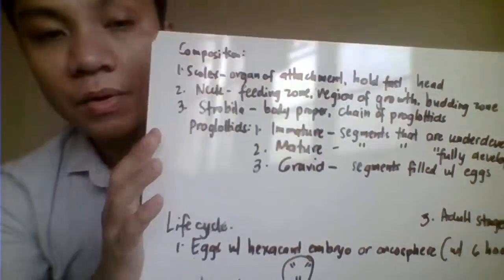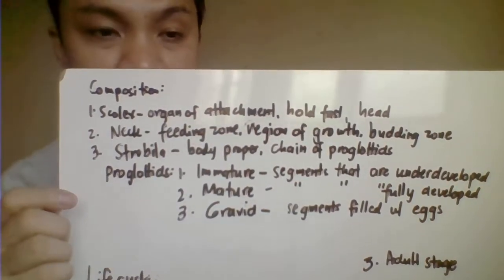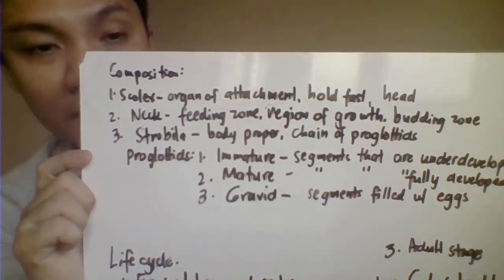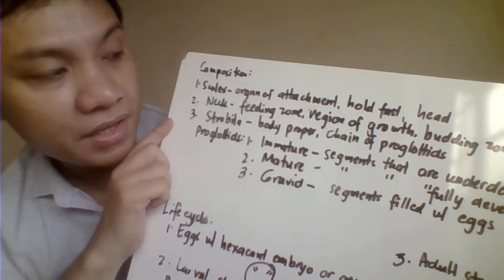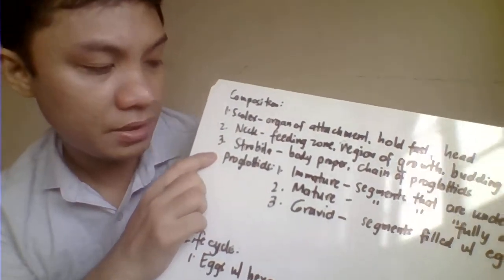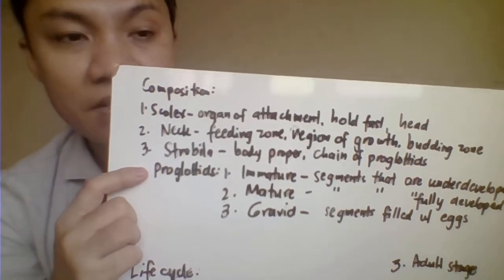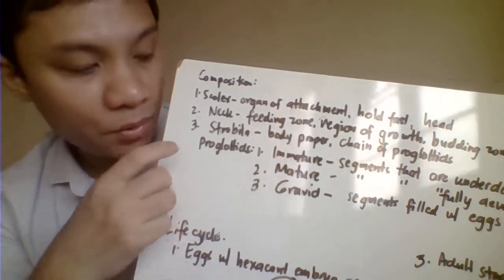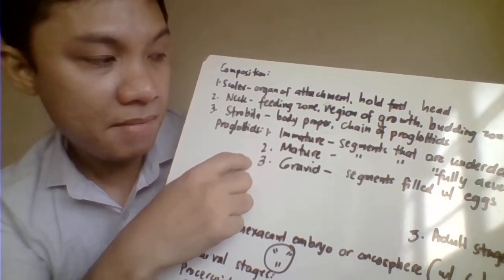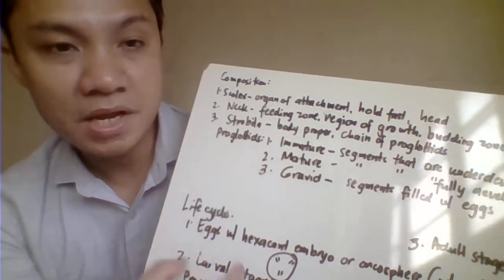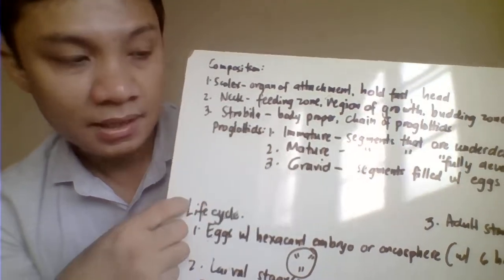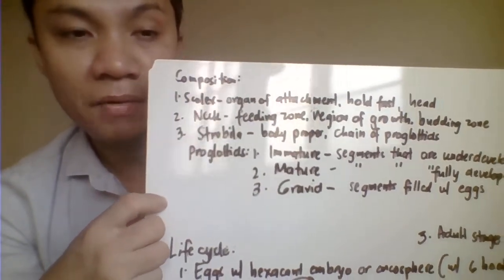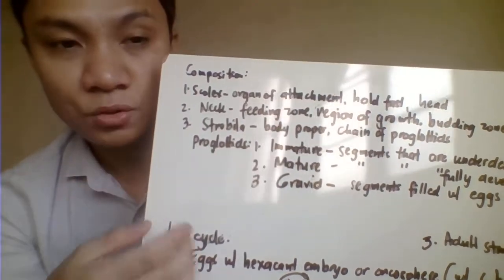Next is the neck part, located between the scolex and the strobila. The neck is the budding stage — also called the feeding zone or region of growth. Lastly, the strobila is the chain of proglottids, or segments. The proglottids are divided into three types: immature, mature, and gravid. The immature proglottids consist of segments that are not yet fully developed.